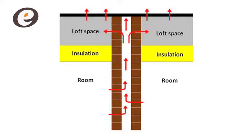Seal and insulate your party walls. With the heat loss from a party wall now taken into account in the SAP calculation, it is very important to ensure that you are not penalised for a U-value of 0.2 in a party wall. By sealing the cavity, ensuring that there is no air movement, and fully filling it with insulation, you ensure a U-value of 0 is achieved and that no penalty is incurred.